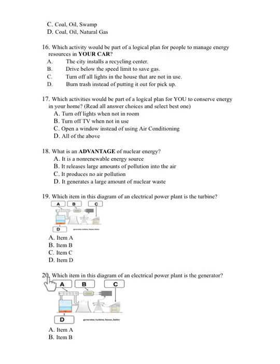Number 20. Which item in this diagram of an electrical power plant is the generator? A. Item A. B. Item B. C. Item C. D. Item D.